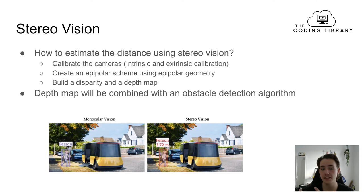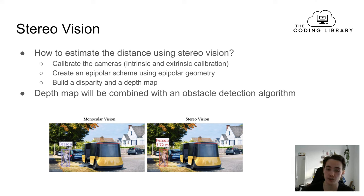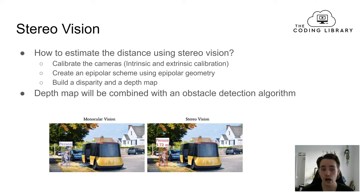How can we estimate the distance using stereo vision? First, as discussed in a previous video, we need to calibrate the cameras to get the intrinsic and extrinsic parameters. We calibrate the cameras to remove as much distortion as possible, then create an epipolar scheme using epipolar geometry. We'll talk about how to use those to build a disparity map, and then convert the disparity map to a depth map to get the depth or distance to each point in our image.